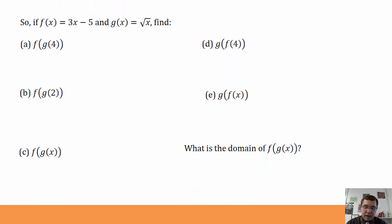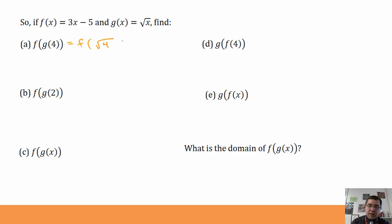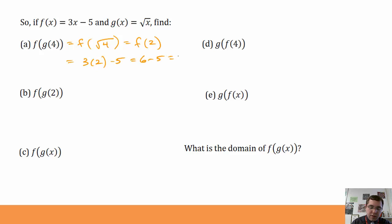For example, using those same two functions f of x equals 3x minus 5 and g of x equals the square root of x, let's find f of g of 4. It means 4 goes into g first, so g of 4 is the square root of 4, which is 2. This gives us f of 2: that's 3 times 2 minus 5, which is 6 minus 5, which is 1. So f of g of 4 is 1.